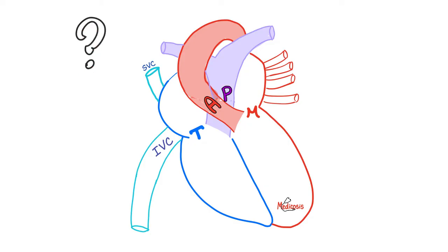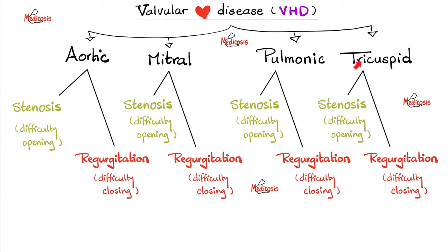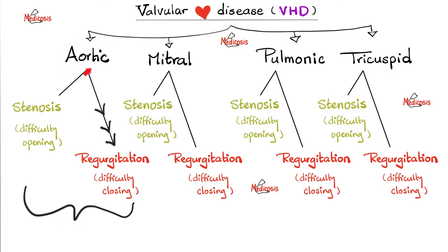Each of the four heart valves can have one of two pathologies: stenosis or regurgitation. Stenosis is difficulty at opening — the valve was supposed to open but did not open properly. Regurgitation, also known as incompetence or insufficiency, is failure to close — the heart was supposed to close and snap shut but it didn't. If you have both stenosis and regurgitation in the aortic valve, we call it double aortic. If in the mitral, it's called double mitral. The same applies to the tricuspid. Today we're talking about tricuspid stenosis, which is difficulty at opening of the tricuspid valve.